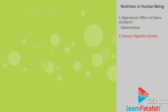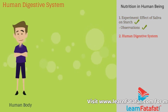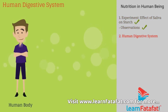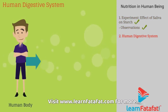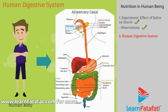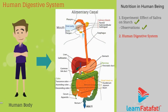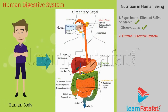Human digestive system: The human body has well-developed structures called the alimentary canal, which extends from mouth to anus and has separate parts to perform specific functions.